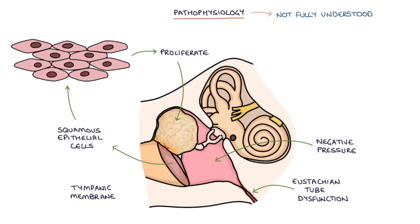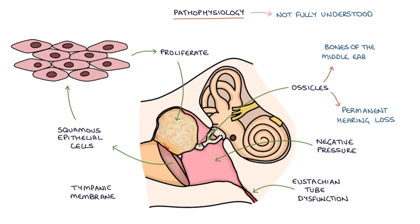The cholesteatoma can damage the ossicles, which are the tiny bones of the middle ear that are involved in hearing, and this results in permanent hearing loss. The ossicles conduct the sound from the tympanic membrane to the inner ear. Therefore, the hearing loss is conductive as opposed to sensorineural.